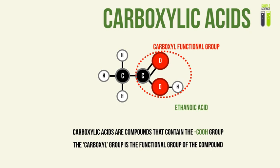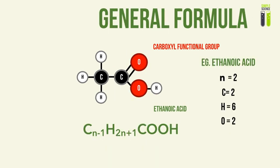This functional group of the carboxylic acids is known as the carboxyl functional group, and it is responsible for the reactions and the properties of the carboxylic acid. This carboxyl functional group is the COOH group highlighted here. It consists of two oxygen atoms and a hydrogen atom, all bonded to a carbon atom. One oxygen atom is double bonded to the carbon atom, and another oxygen atom is bonded via an OH group to that same carbon atom.